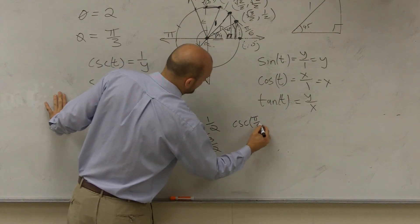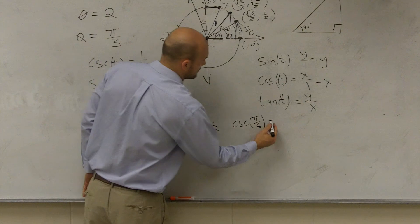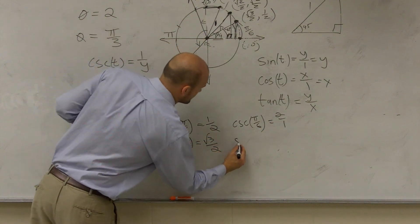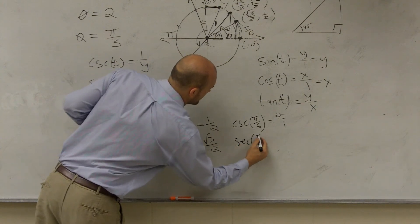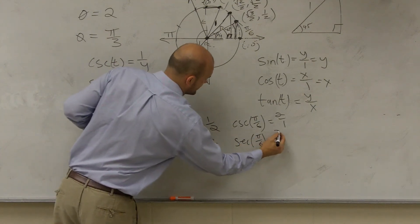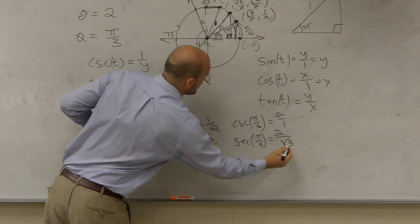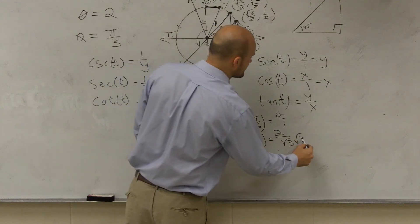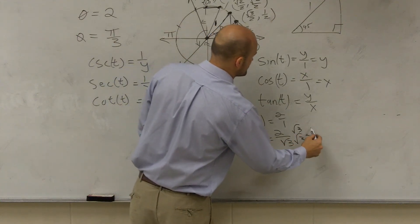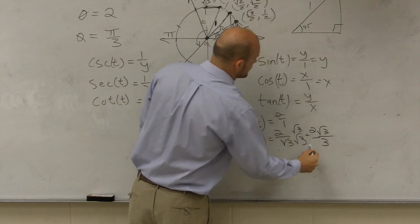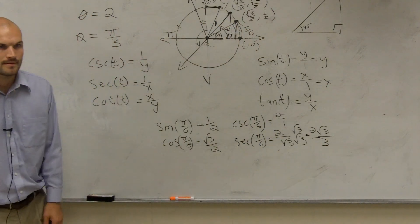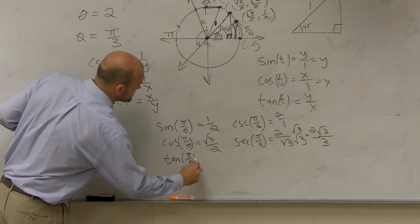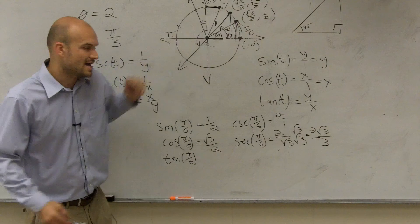The cosecant of that is the reciprocal. So what's the reciprocal of one half? Two over one. And the reciprocal of square root of three over two — when you flip it, you get two over radical three. Can you have a square root on the bottom? No. So you need to rationalize the denominator. So you get two radical three over three. The tangent of pi over 6 represents y over x, so you have one half divided by square root of three over two.